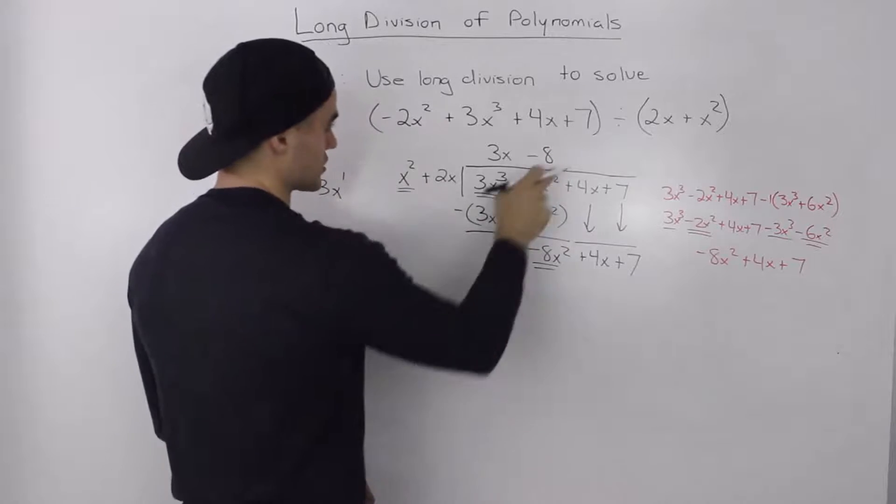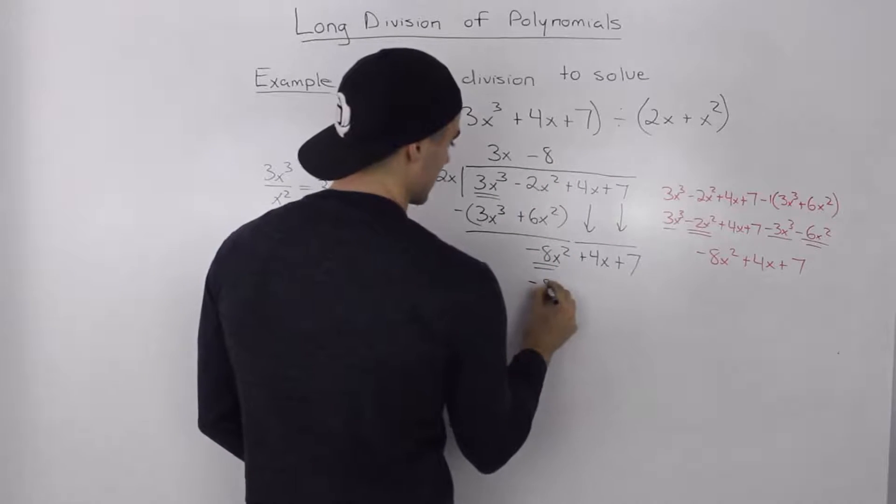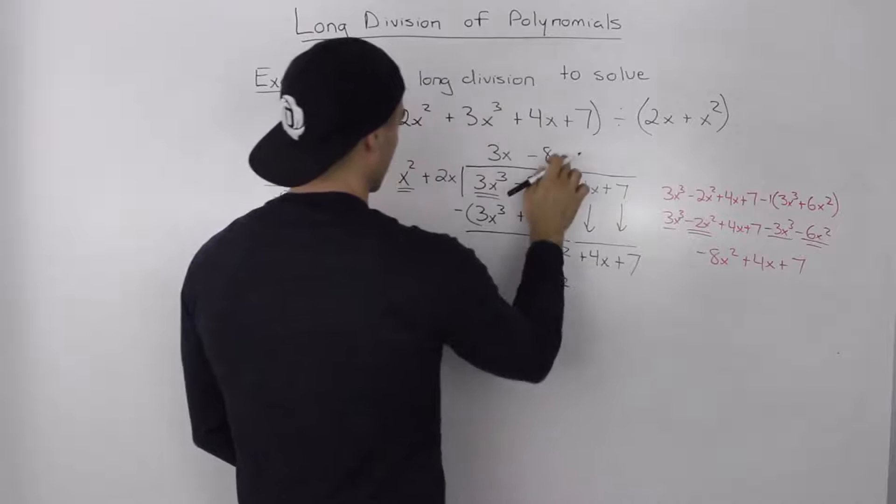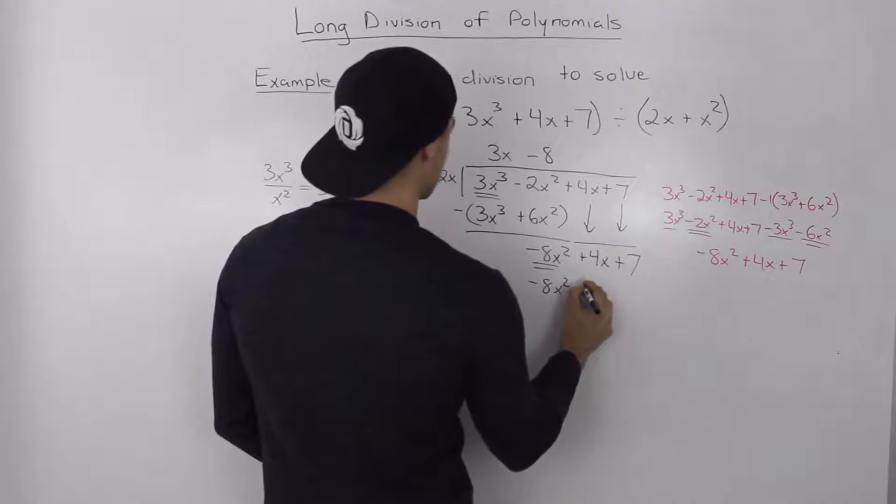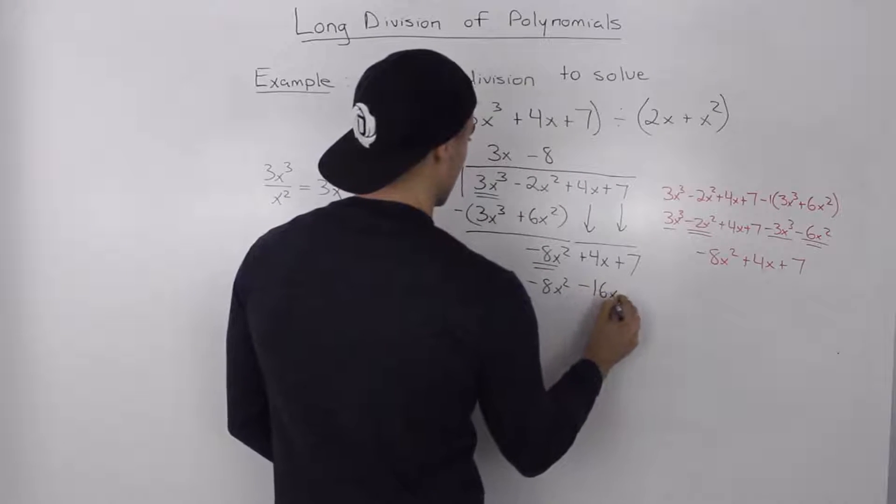Take the negative 8, multiply it by the divisor. So negative 8 times x squared is negative 8x squared. And then negative 8 times 2x is negative 16x.